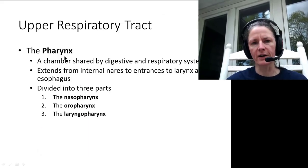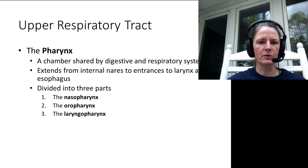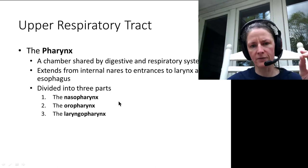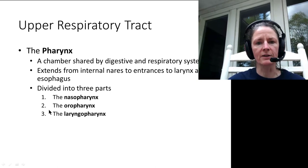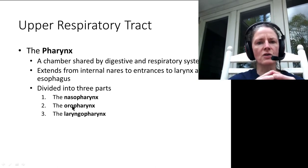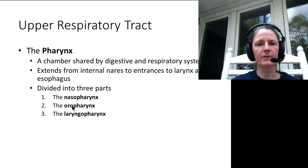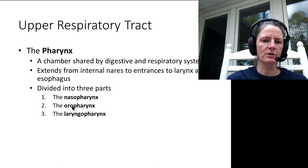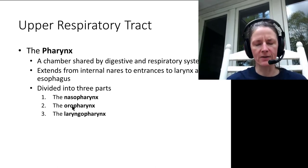The pharynx — the throat — has three regions: the nasopharynx behind the nasal cavity, still lined with pseudostratified columnar epithelium; the oropharynx behind the mouth; and the laryngopharynx behind the larynx. The oro- and laryngopharynx revert to stratified squamous epithelium for protection from foods, abrasive things, and chemicals. Once we transition from the laryngopharynx into the trachea, we return to pseudostratified columnar epithelium.